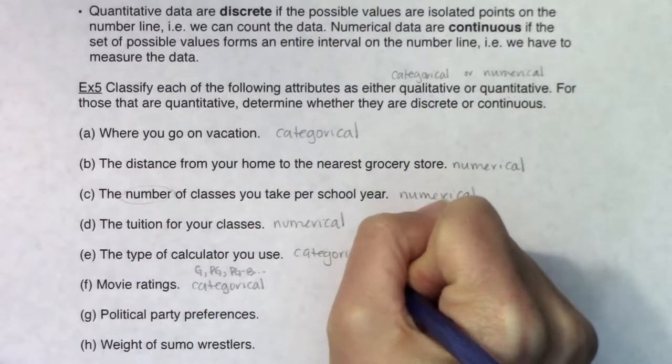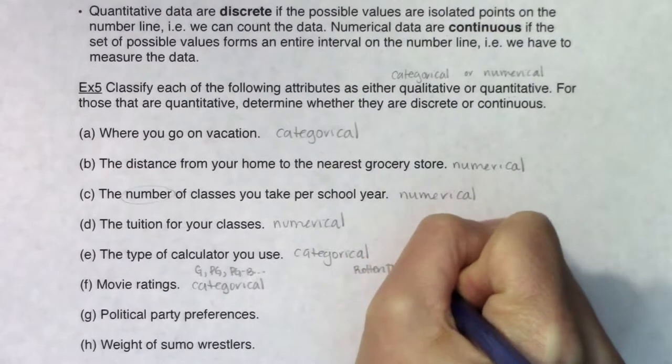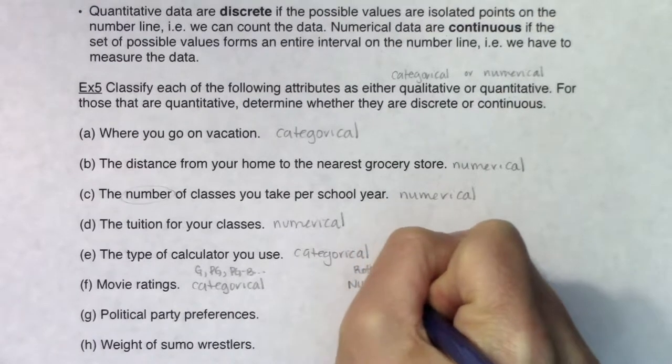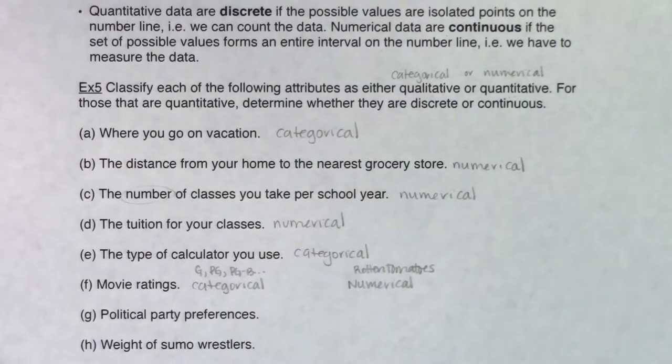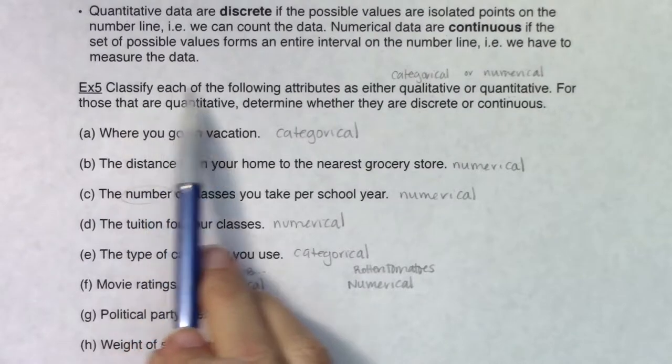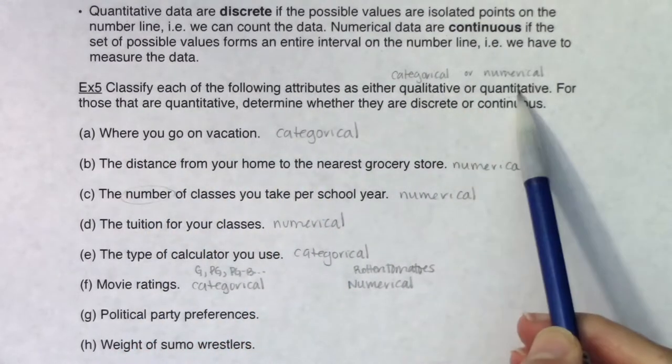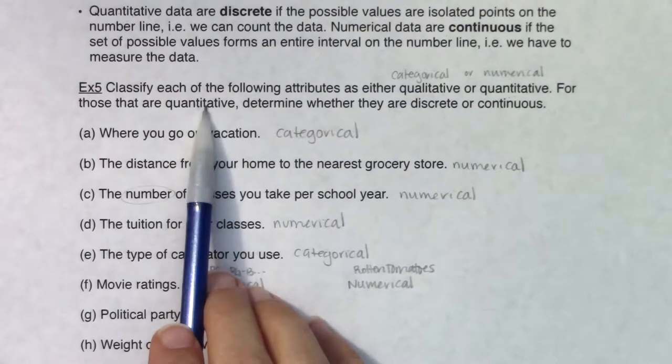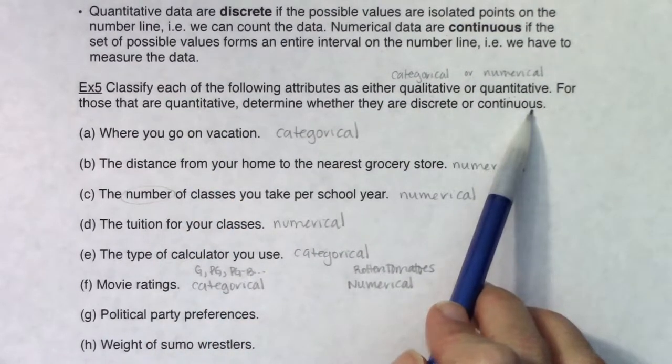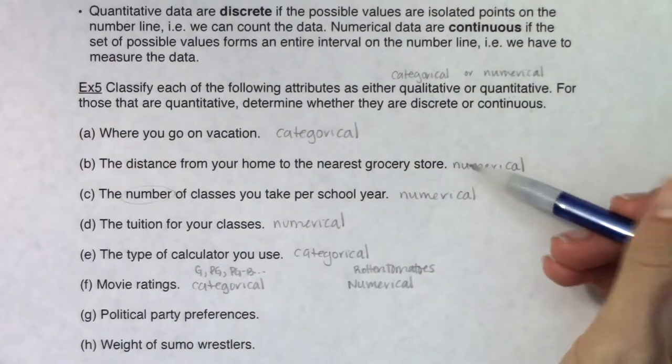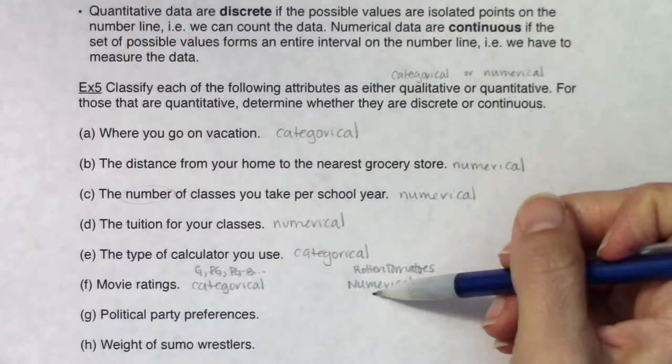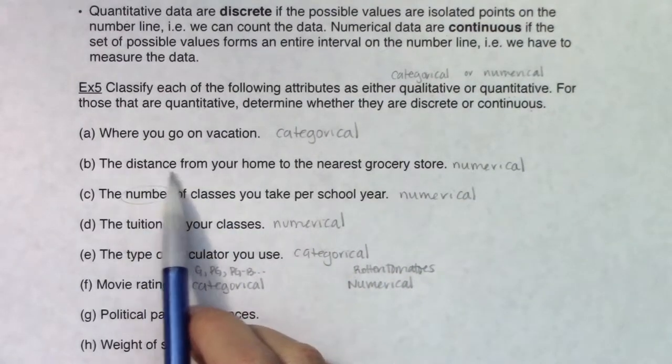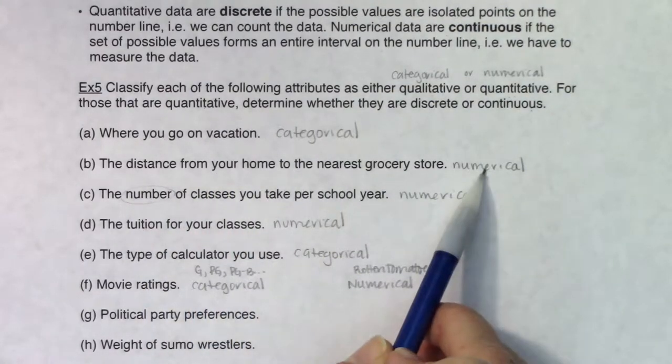If you're going to look at it through rotten tomatoes, which is fine, that would be numerical. I have classified each of the following as either categorical or numerical. For those that are quantitative, for those that are numerical, we have to go discrete or continuous.